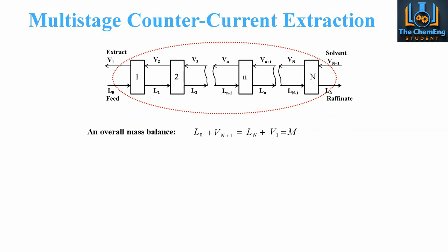We'll perform an overall mass balance without accounting for the individual stages just yet. What is coming into the system is our feed plus our solvent Vn+1, and that must equal what leaves the system — the raffinate Ln plus the extract V1. This is equal to M, which is the midpoint for the mixing.